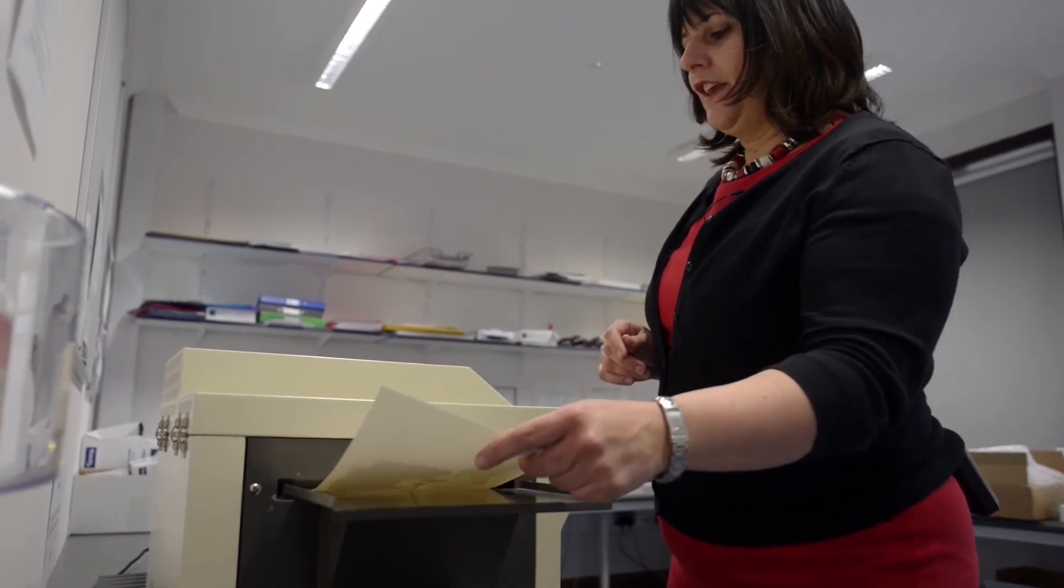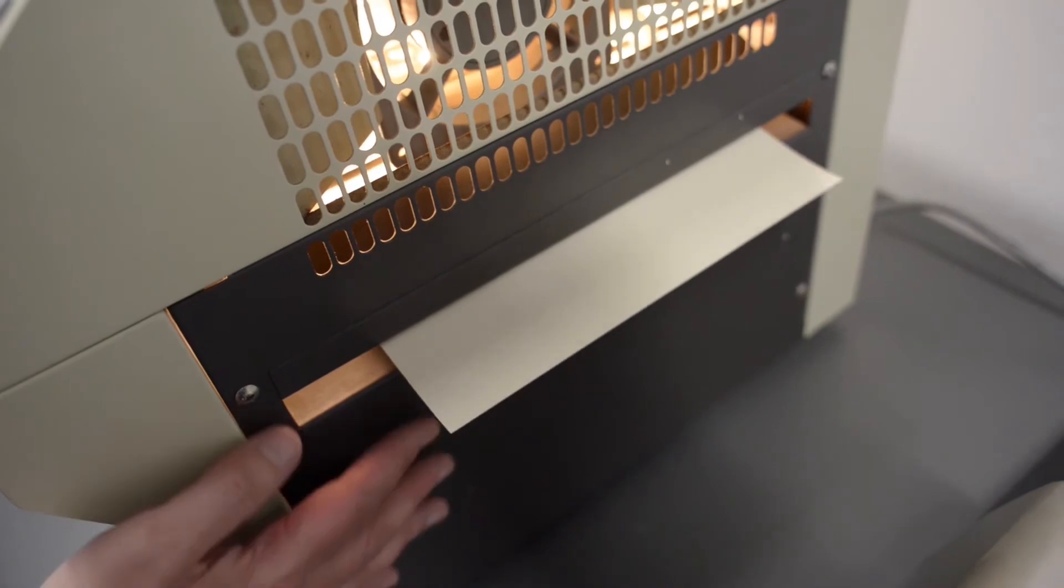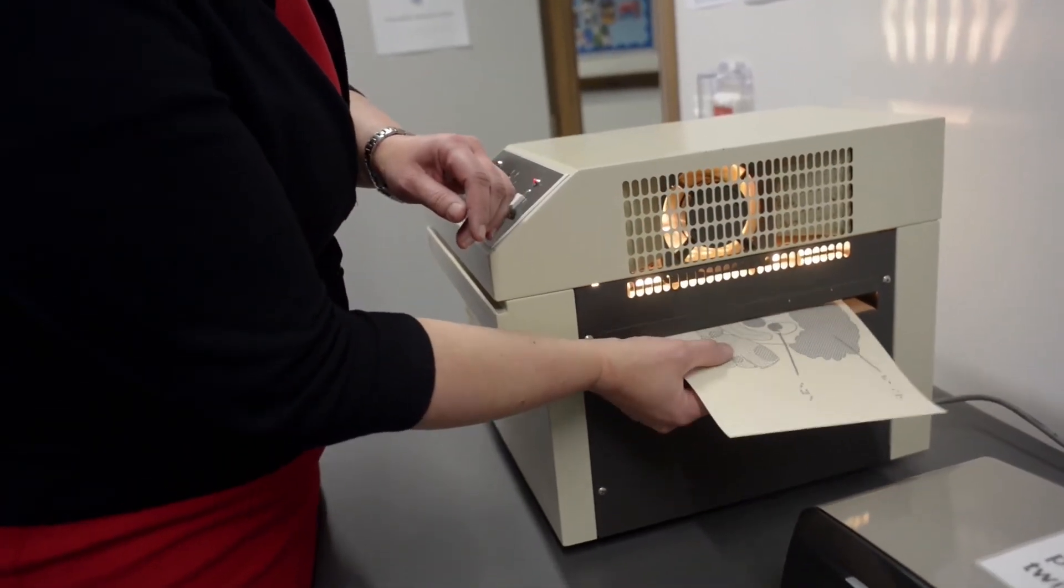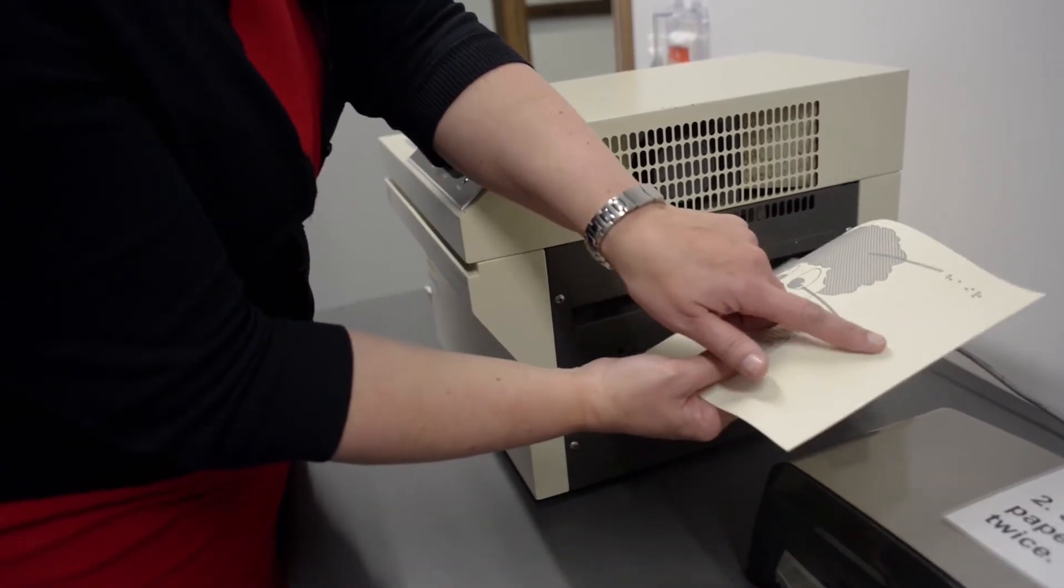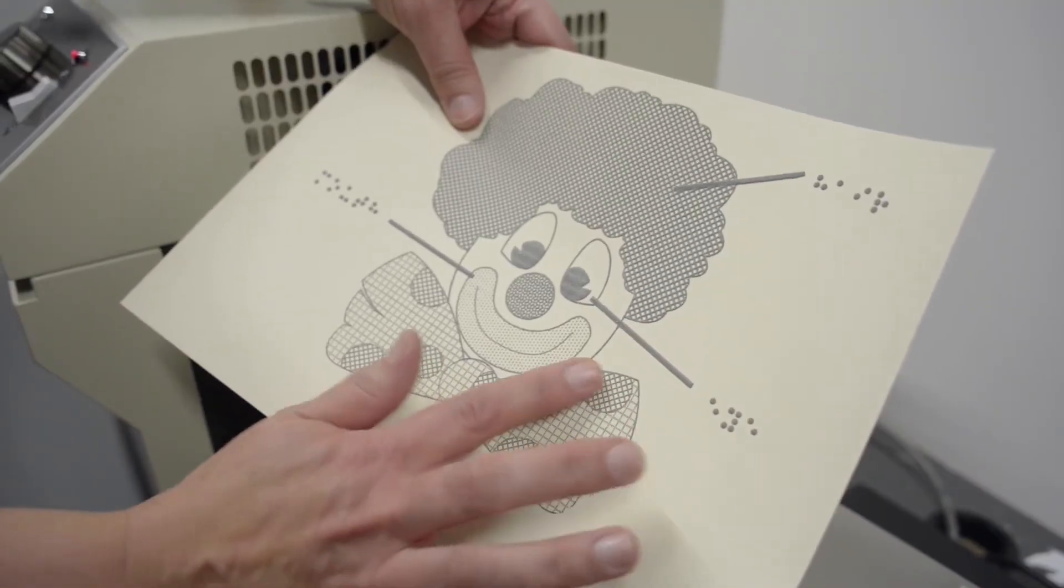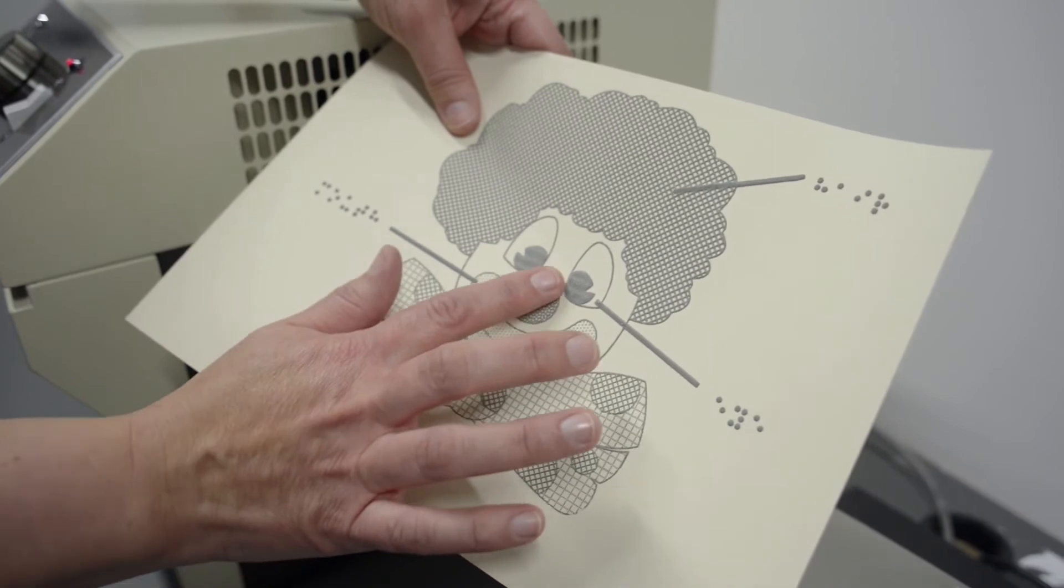Each diagram is taken individually and fed through the heat fuser like this. When it comes out the other side each of the darkened areas of the diagram should now be swollen and you should have a textured effect that is sensitive to your touch.